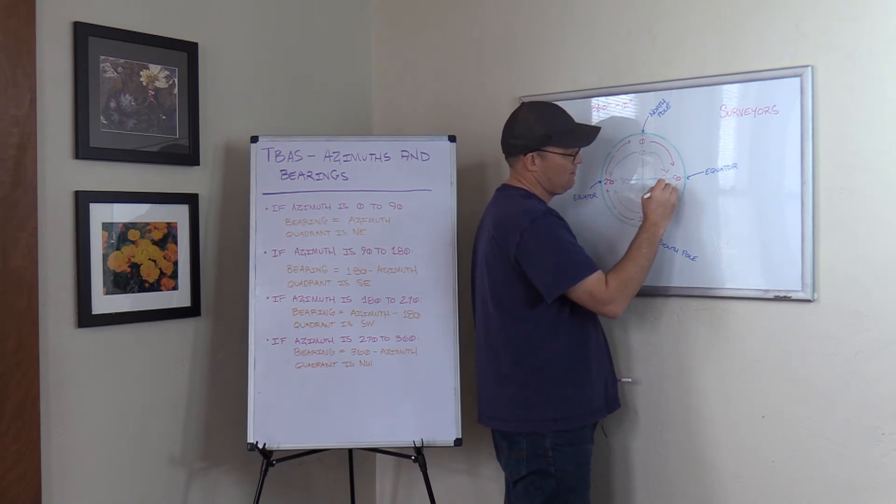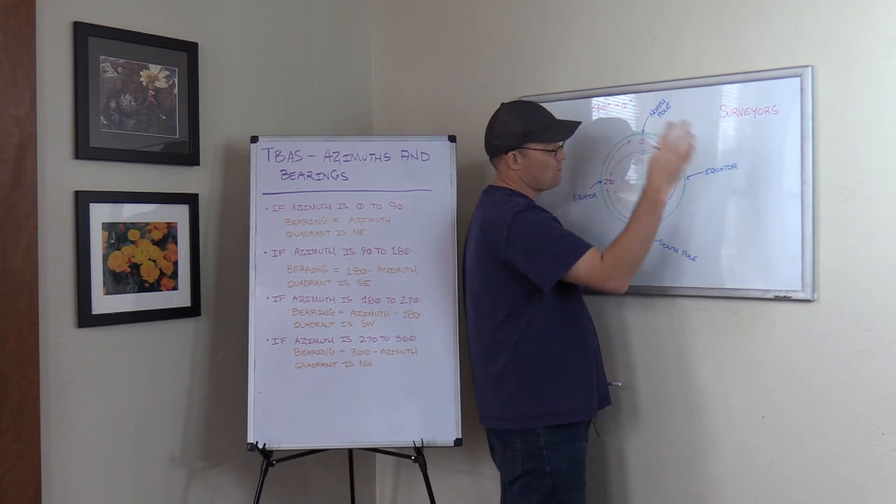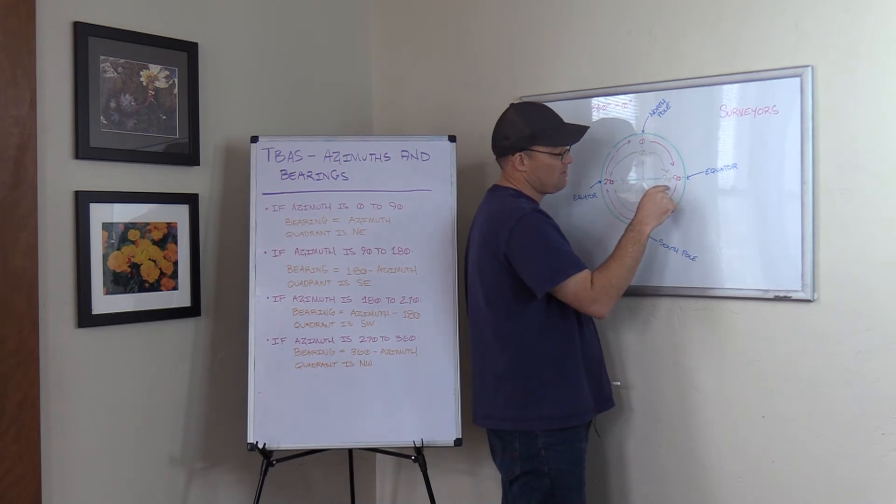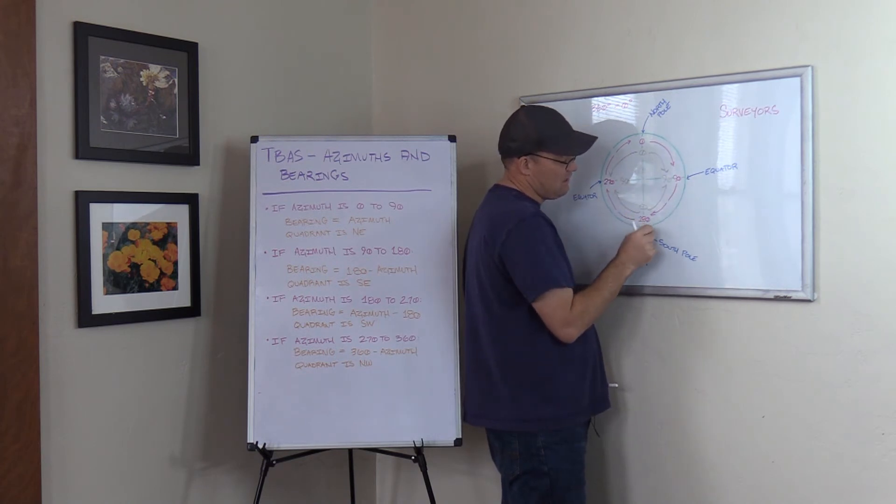The arrows point different directions too. On a bearing, we measure the value of the bearing. The bearing gets bigger as we go down towards the equator from the pole. So they get bigger this way and they get bigger this way.